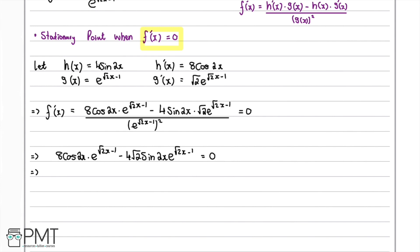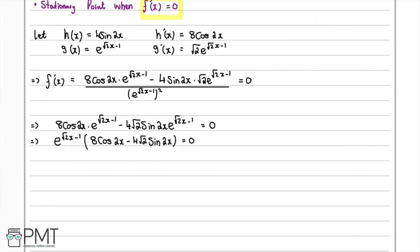Taking out e to the power of root 2x minus 1 as a common factor gives e to the power of root 2x minus 1 times (8 cos(2x) minus 4 root 2 sin(2x)) equals zero. Dividing both sides by e to the power of root 2x minus 1 eliminates the exponential, leaving 8 cos(2x) minus 4 root 2 sin(2x) equals zero.